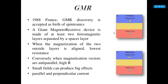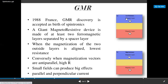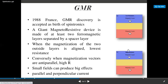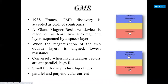A Giant Magnetoresistance (GMR) device is made up of at least two ferromagnetic layers separated by a spacer layer. When the magnetization of the two outer layers is aligned, there is lowest resistance. Conversely, when the magnetization vectors are anti-parallel, there is high resistance. A small field can produce a big effect in both parallel and perpendicular current configurations. The anti-parallel current involves changes between two magnetic layers — this gives high resistance, while parallel magnetization gives low resistance.